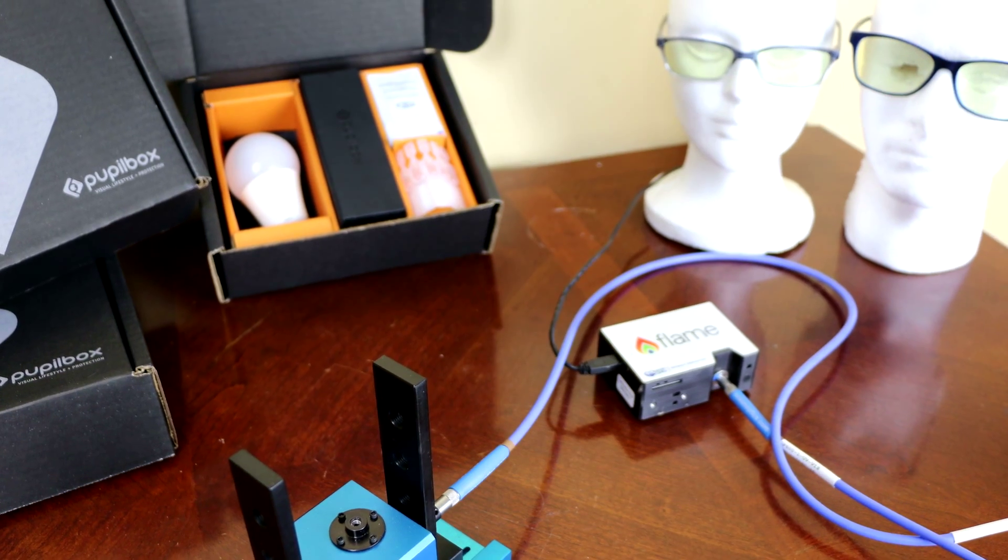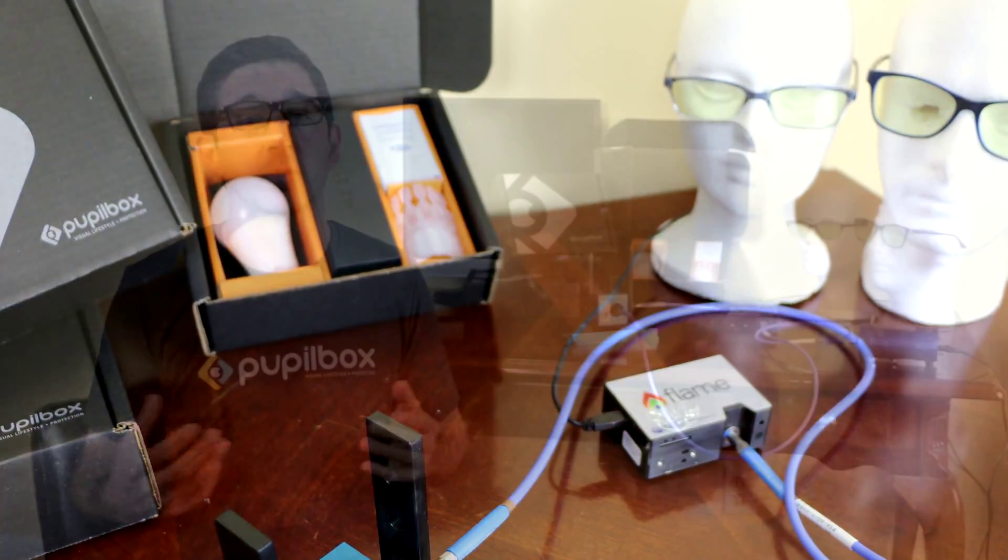We need an adaptable spectrometer, one that's both portable, so we can take it into places like a school to measure the light around the students. And a spectrometer that will allow us to test all the different products that we're bringing to market.